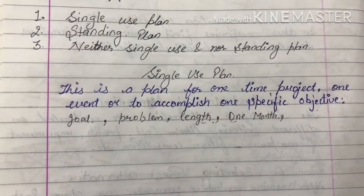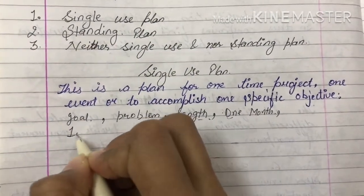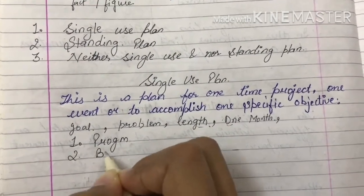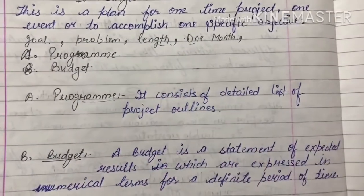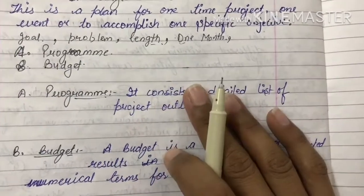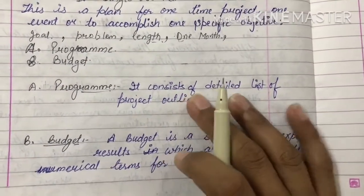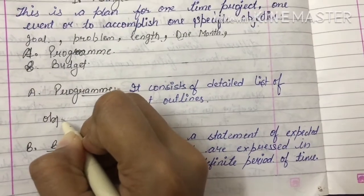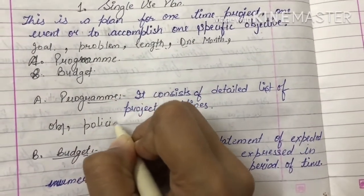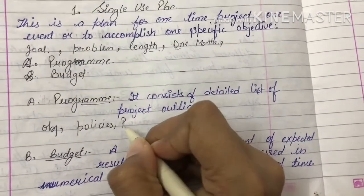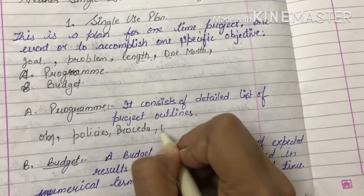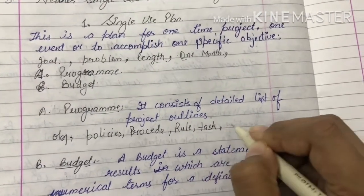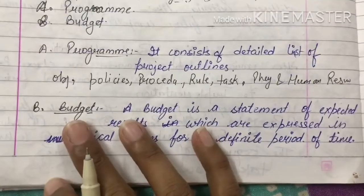Single use plan में हम program और budget count करते हैं. A program is a single use plan containing details and statements about project outlines. इसमें आपके objectives, policies, procedures, rules, tasks, और physical and human resources शामिल होते हैं.